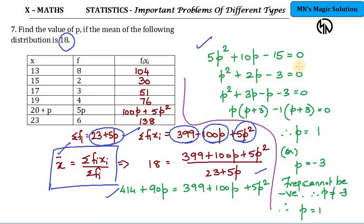Rearrange and you tend to get a quadratic equation. Quadratic equation by splitting the middle term, I get two answers for it: p is equal to 1 and p is equal to minus 3. But frequency can never be negative, so this is not a possibility. Therefore we take p is equal to 1. So this is how we sort out this problem.